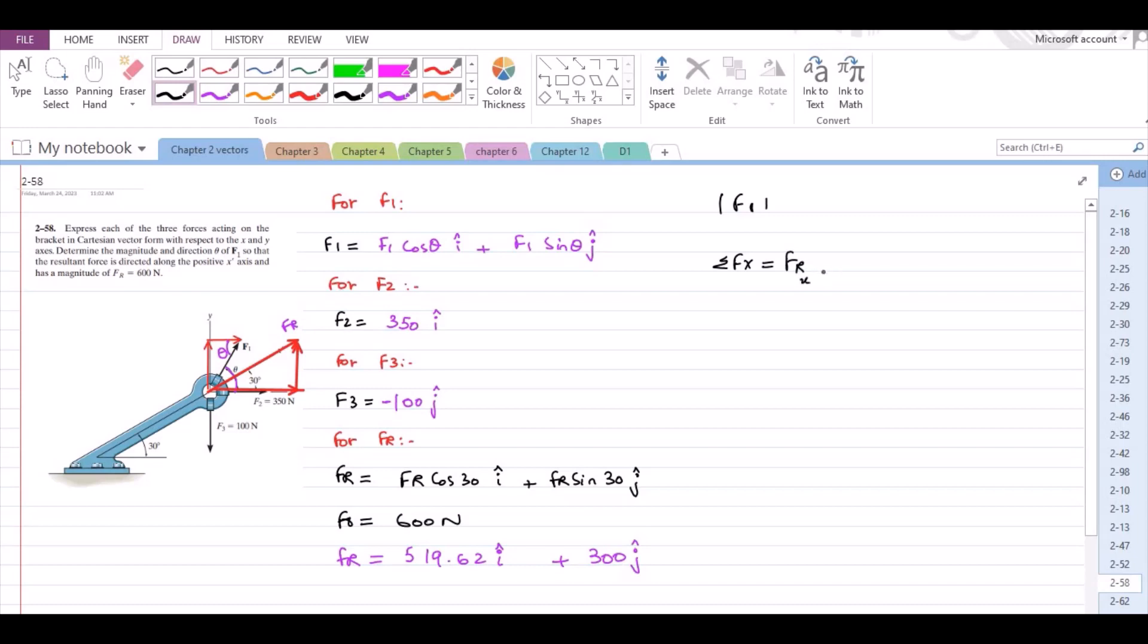Which in terms of F1 cos theta plus 350 equals 519.62. From here, F1 cos theta equals 169.62. Now this is our equation 1.